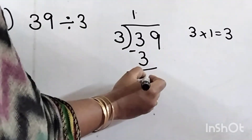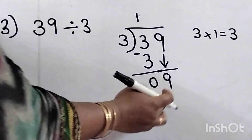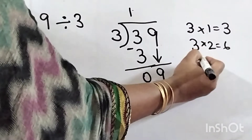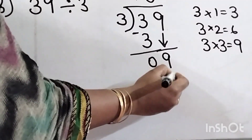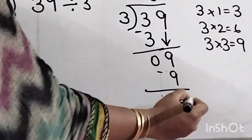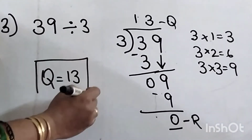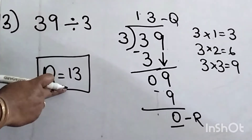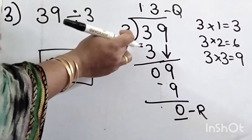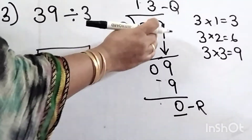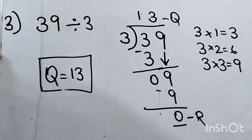Then subtract: 3 minus 3 is 0. Now take the next number, 9. Say 3 tables: 3 ones are 3, 3 twos are 6, 3 threes are 9 — it is 3 times. Write 3 here and write 9 down. Quotient is 13. So 39 divided by 3 equals 13. When the first digit equals the divisor, take only that one digit and divide first, then bring down the next number.